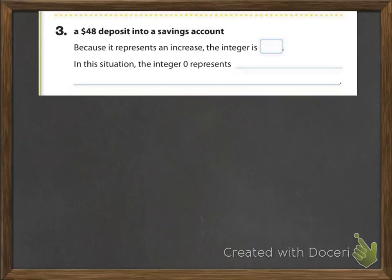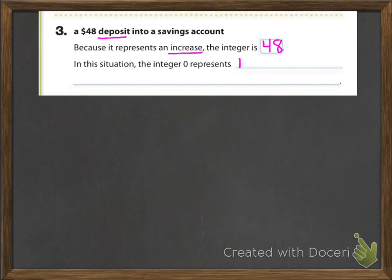Because it represents an increase, the integer is 48. In this situation, the integer 0 represents neither a deposit nor a withdrawal. So you want to write: the integer 0 represents neither a deposit nor a withdrawal.